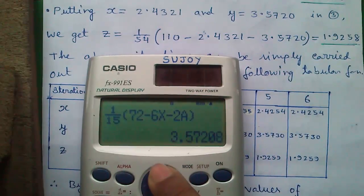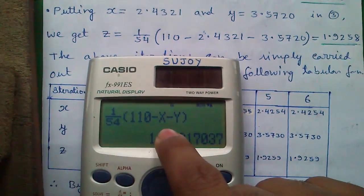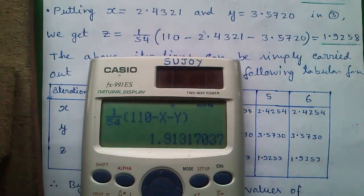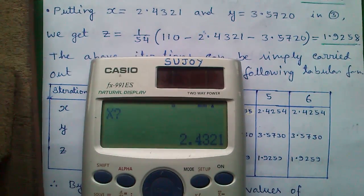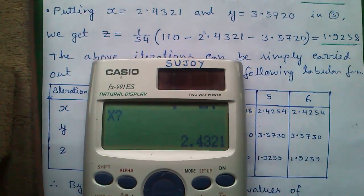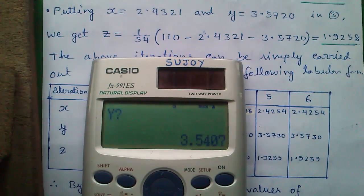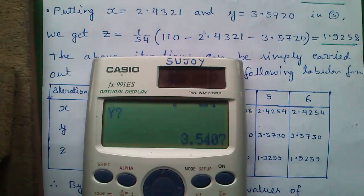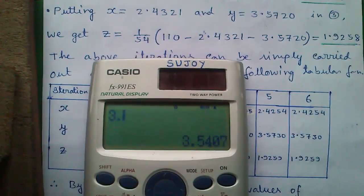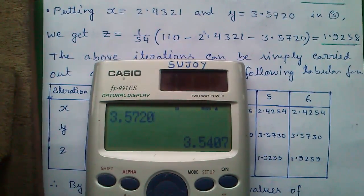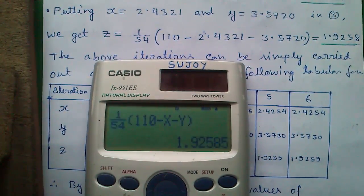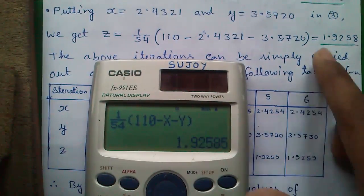Similarly for z press joystick up, find 1 by 54, press calc. And x is 2.4321, y is 3.5720, and press equals. So z is 1.9258.